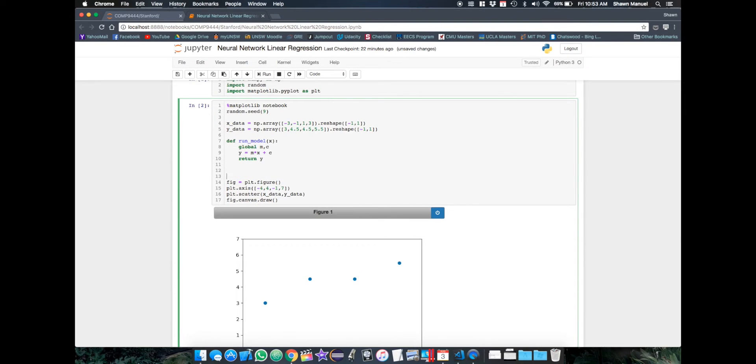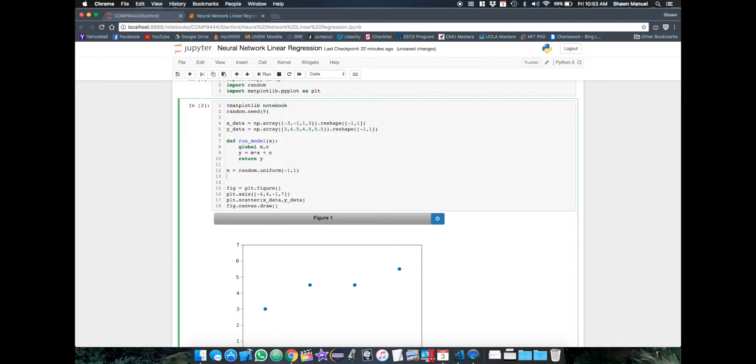So we then need to define the initial values of these parameters. And so let's set m to be random number between negative 1 and 1 and c can just be 0.